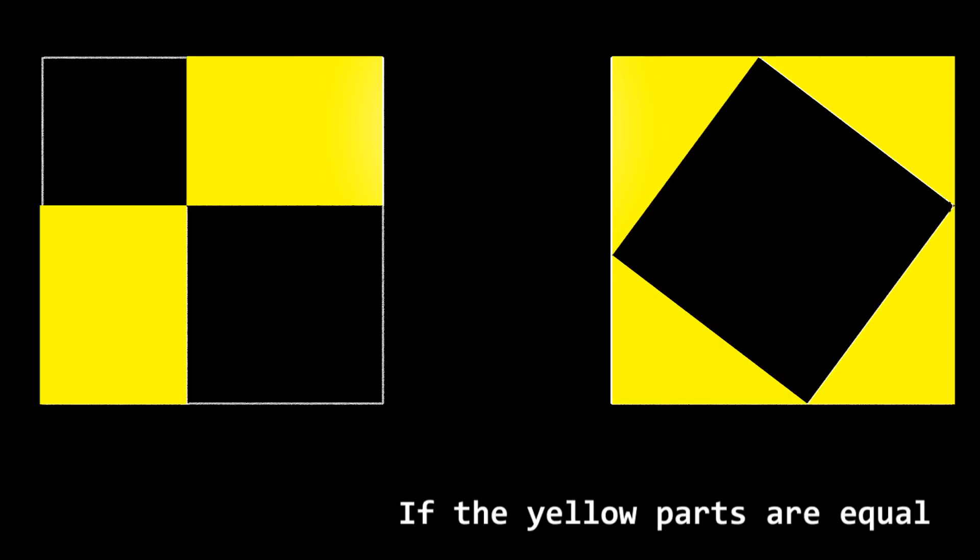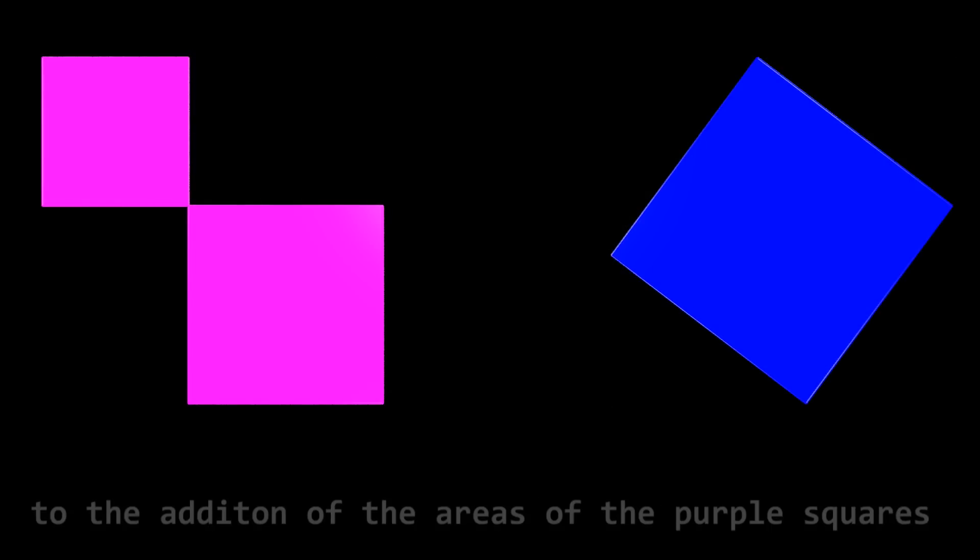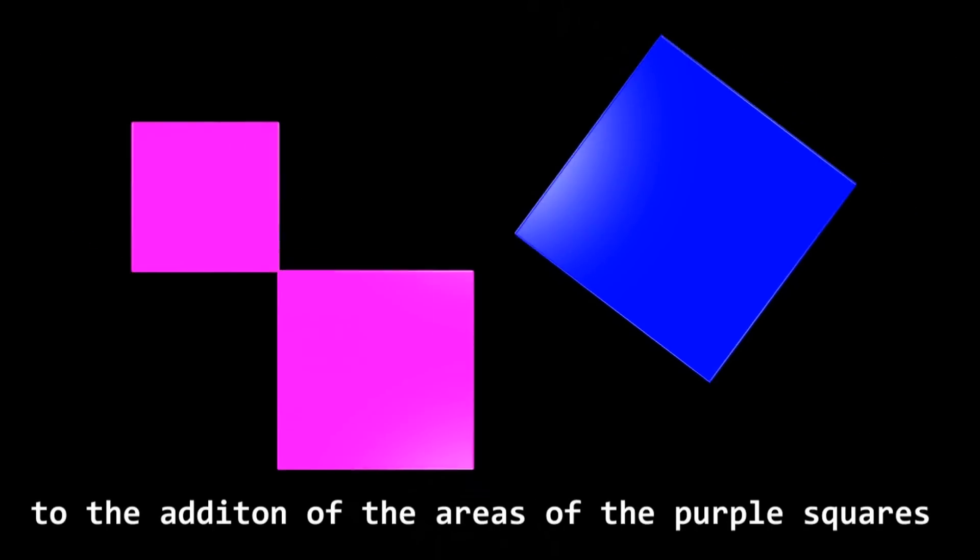If the yellow parts are equal and the white squares too, the blue area must be equal to the addition of areas of the purple squares.